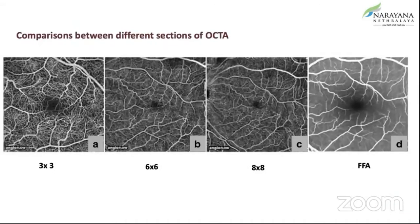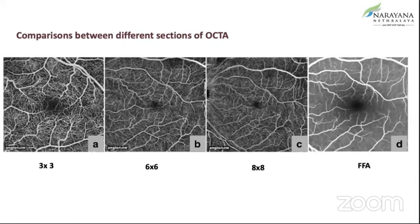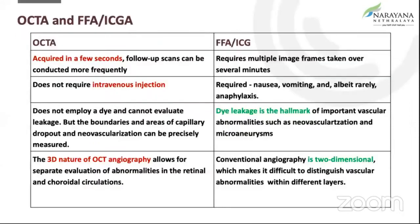If you look at the different scan sizes available on OCTA, you have a 3x3, 6x6, and an 8x8 scan, and this is how much of the field of view that you get. That's one of the major limitations — we are not actually able to image the periphery beyond the arcades using the OCTA. But with montaging and higher scan areas, we are getting there where we'll eventually be able to image even the mid-periphery.